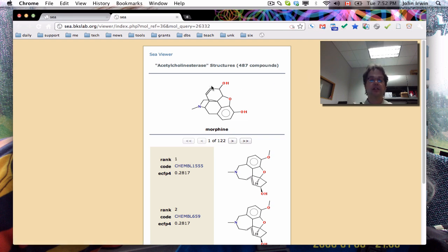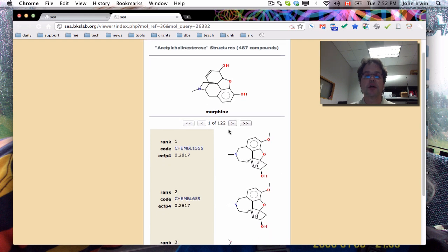And so here what you get to see is the acetylcholinesterase, the ligand, morphine, at the top. And then you're going to see the most similar ligands that are annotated against acetylcholinesterase. 487 of them from ChEMBL. But here, the two most similar ones are actually remarkably similar. If you look, it's got an aryl ring with some methoxy or hydroxyls on it. It's got the nitrogen, the charged nitrogen.